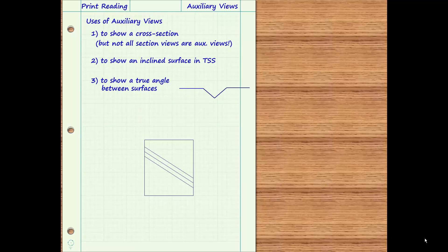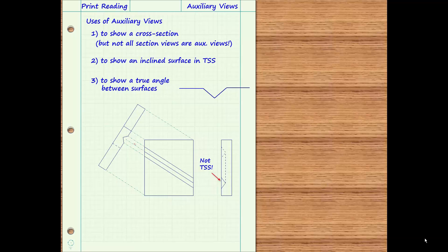Here is an example of an object with a V-groove that can be seen in the front view. In the right side view, the groove is seen, but the bottom of the V-groove appears as a line in this view, not as a single point. This means that the dihedral angle is not true size and shape in the right side view, because the surfaces that make up the groove are both inclined and rotated with respect to the profile viewing plane. To show the groove in true size and shape, an auxiliary view is required. Projecting the auxiliary view off of the front view will result in a perspective from which the bottom of the V-groove appears as a single point, and the V-groove's dihedral angle will be seen in its true size and shape.